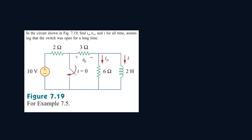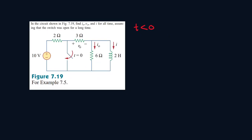For the following circuit, we have to find the equations for IO, VO, and I for all times, assuming that the switch was open for a long time. When T equals 0, that's when we close the switch. So let's focus on the circuit before we close the switch, when T is less than 0.